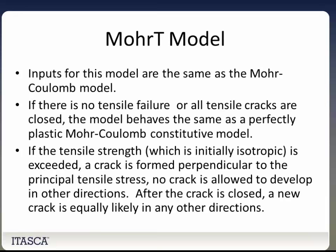Next we have the MOR-T model. The inputs are the same as the Mohr-Coulomb model. If there is no tensile failure or all tensile cracks are closed, the model behaves as a perfectly plastic Mohr-Coulomb constitutive model. But if the tensile strength is exceeded, a crack is formed perpendicular to the principal tensile stress. No crack is allowed to develop in other directions. After a crack is closed, a new crack is equally likely in any other direction.